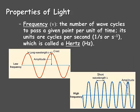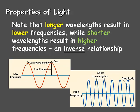Frequency is a third property of light, represented with the Greek letter nu. The number of wave cycles to pass a given point per unit of time is the frequency. Its units are cycles per second, which can be represented as 1 over s, or s to the negative first, but it has its own unit called a hertz, abbreviated Hz. Note that longer wavelengths result in lower frequencies, while shorter wavelengths result in higher frequencies — indicating an inverse relationship between wavelength and frequency.